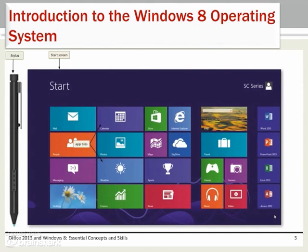The Windows 8 interface begins with the Start screen. Programs are displayed as tiles. A tile is a shortcut to an app or other content. Users can input information with Windows 8 through a touch screen, a stylus, or a mouse.